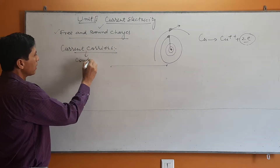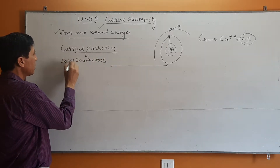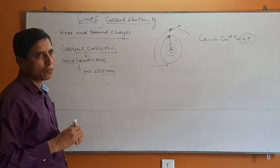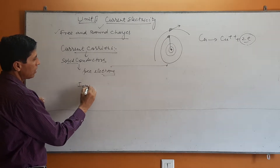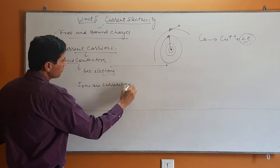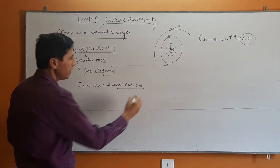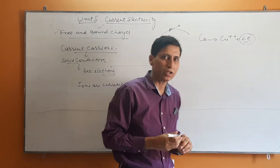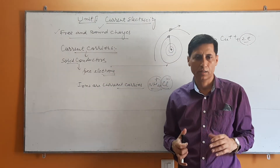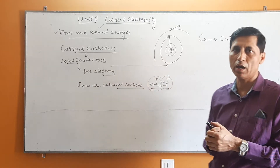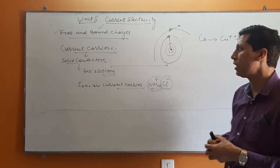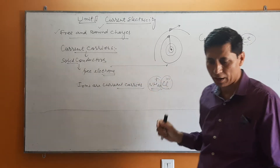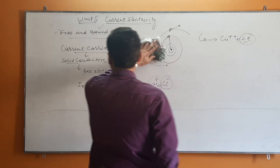In solid conductors like metals, free electrons are the current carriers. In case of electrolytes, ions are the current carriers — for example, ammonium chloride in solution splits into ammonium ions and chloride ions, and these ions are responsible for conduction. In gases, generally they do not conduct electricity. So overall, in solid conductors, free electrons are the current carriers.